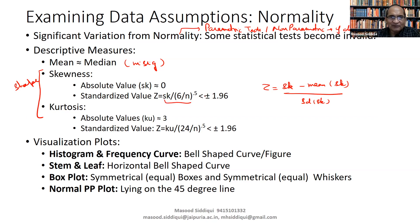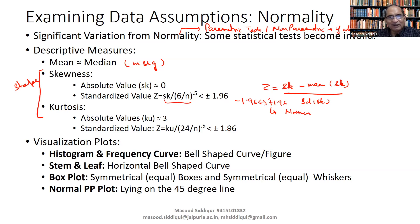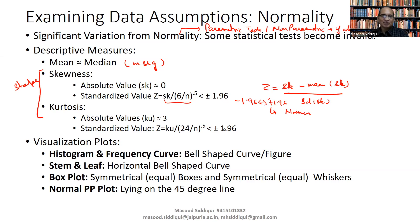If we standardize these values — skewness minus its mean divided by its standard deviation — and the standardized values lie between minus 1.96 and plus 1.96, they should be treated as normal. Similarly, if the standardized value of kurtosis lies between minus 1.96 and plus 1.96, it is normal. Beyond 1.96 on either side, it should be termed as non-normal distribution.